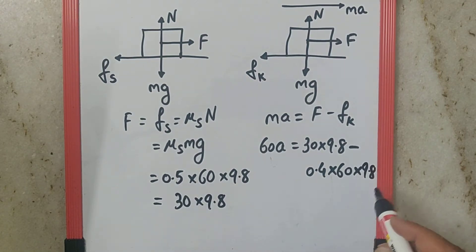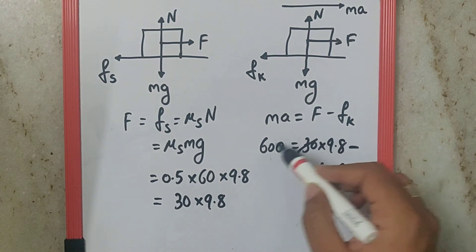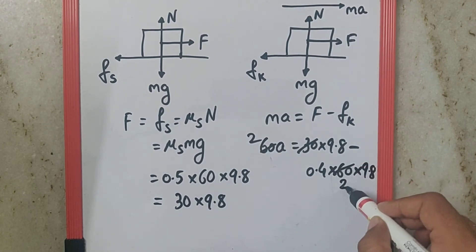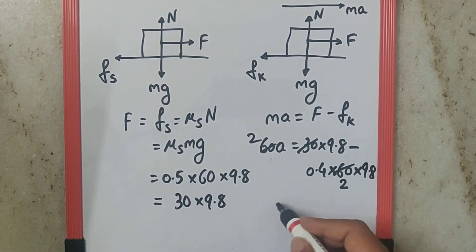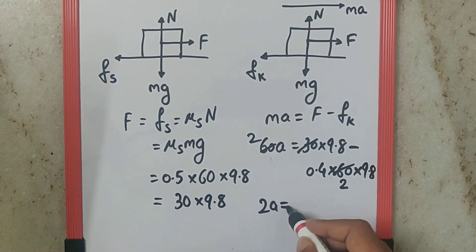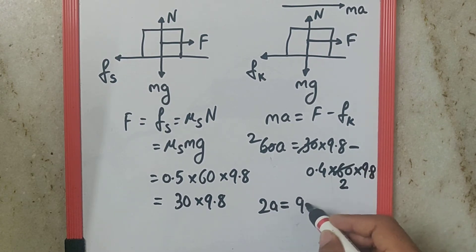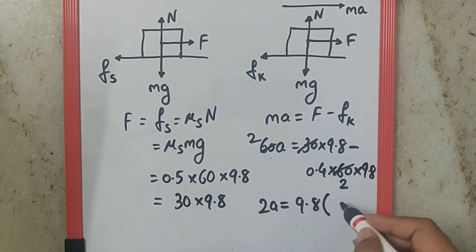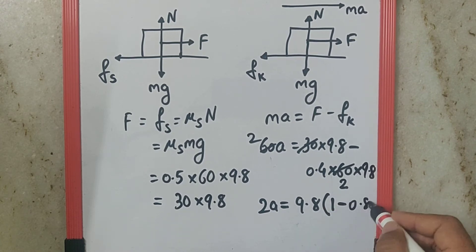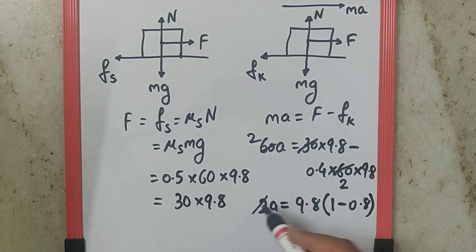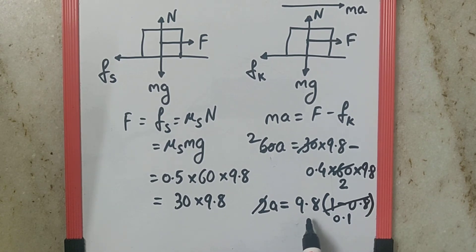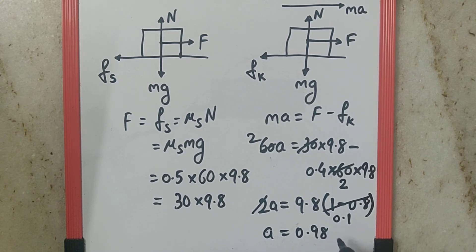Now, if you understand this, I can cancel this 30, make this 2, make this 2. So, this becomes 2A is equal to 9.8 taken common, bracket will have 1 minus 0.8, which makes it 0.2. So, if you cancel this 2 with this, you will get it as 0.1. So, 9.8 into 0.1 will give the acceleration as 0.98 meter per second square.